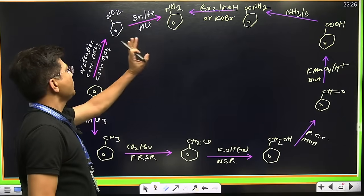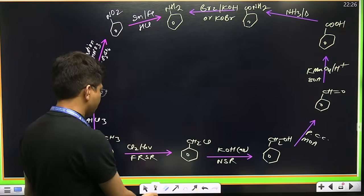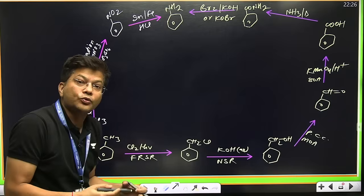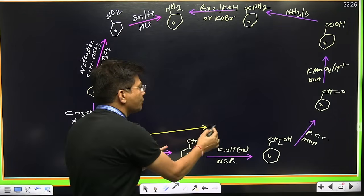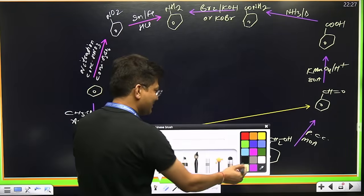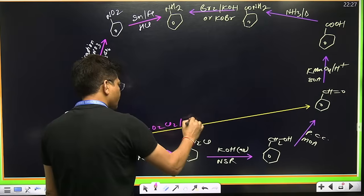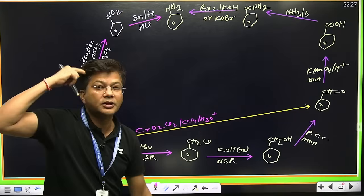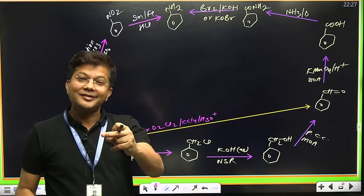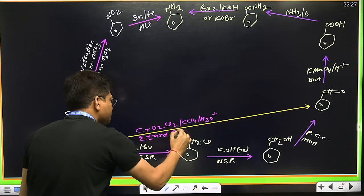It's just the starting. Whenever you revise organic chemistry, first do this mind map. Now let's go inside of it. How will you reach from toluene to benzaldehyde? Use CrO2Cl2 in CCl4 with H3O+. This is known as Etard reaction.